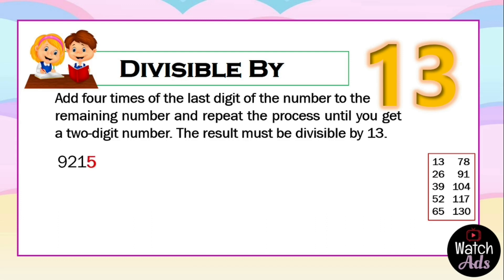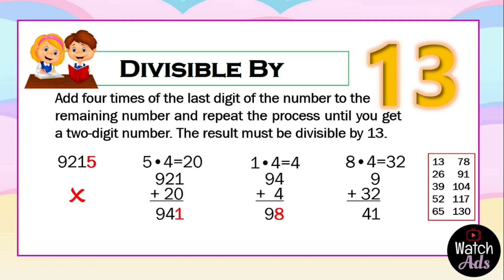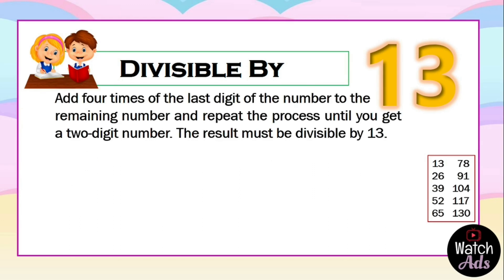The last digit is 5. We multiply it by 4 to get 20, then add it to 921. The answer is 941. Next, we take the last digit 1, multiply it by 4, and add to 94 to get 98. Next, we take the last digit 8, multiply it by 4 to get 32, then add 9 to get 41. Looking at the table on the right side, 41 is not a multiple of 13, which means 9215 is not divisible by 13.